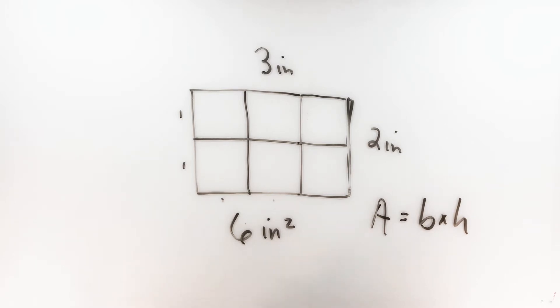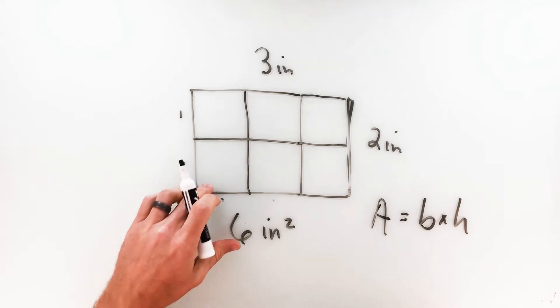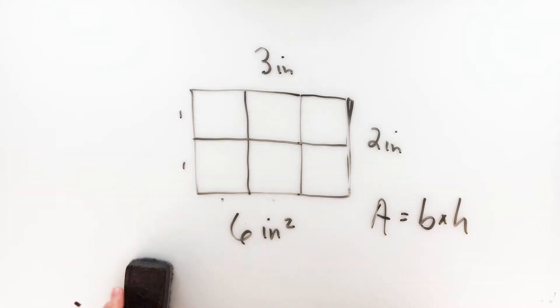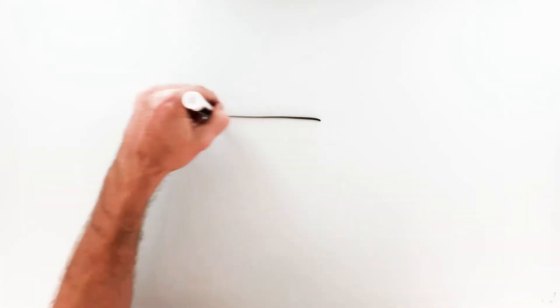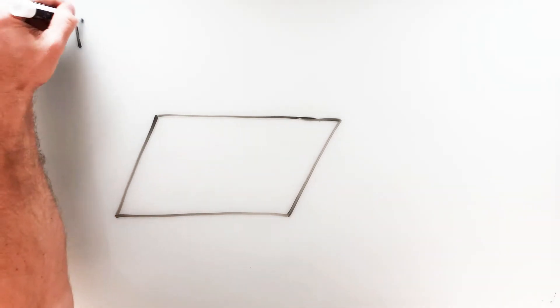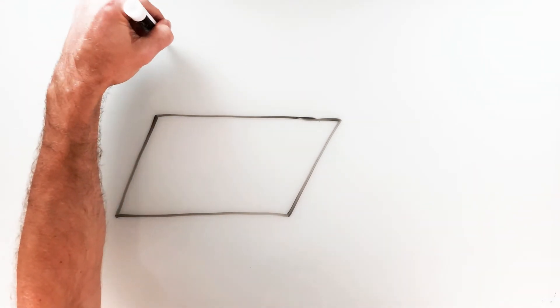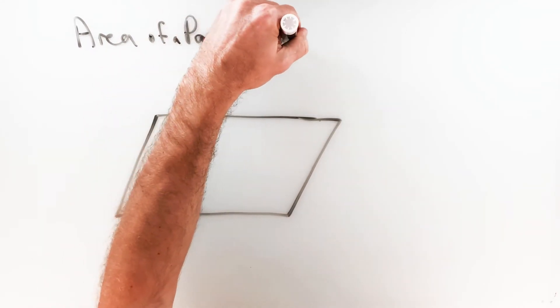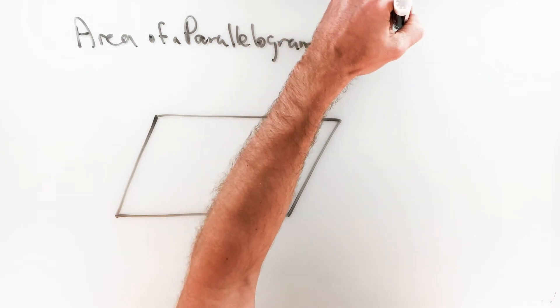You might think, well sure it's easy when everything's square and you've got these nice right angles and your square units stack nicely on top of each other. What if you have slanted sides? What if you're looking at something like a parallelogram? I've got good news for you — the formula stays the same. The formula for the area of any parallelogram is just base times height.